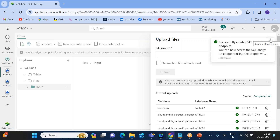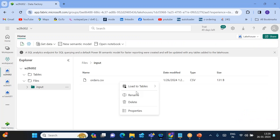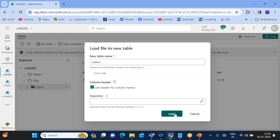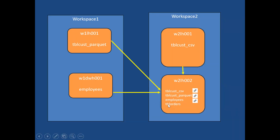I'll upload an orders CSV file into a folder, then load it to a table. I'll name it orders. But most importantly, I need to create three shortcut links here: one for Workspace One Lake House 001 (tbl_cust_parquet), one for Workspace One Data Warehouse 001 (employee table), and one for Workspace Two Lake House 001 (tbl_cust_csv).